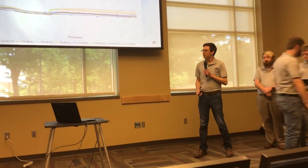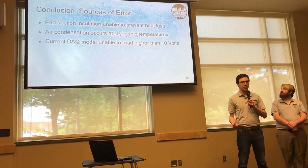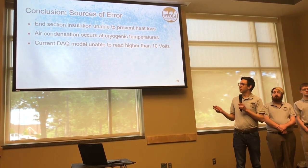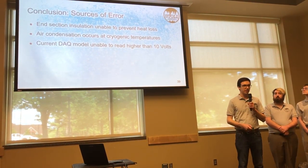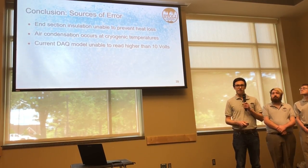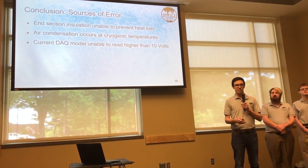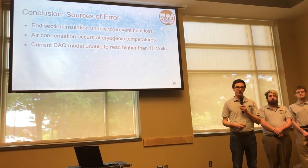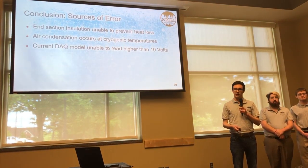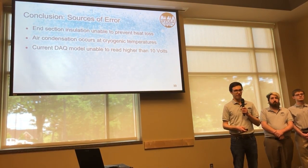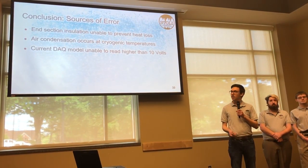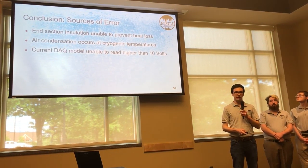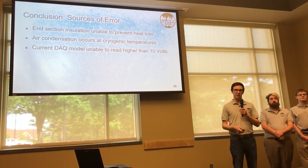There are a few primary sources of error. Our test section is leaking heat axially, and our model does not account for that — the axial loss is too significant to approximate as zero. We also observed air condensation, whether oxygen or nitrogen, occurring inside the pipe at liquid nitrogen temperatures. Additionally, the current DAC model cannot read higher than 10 volts, which would be a problem for high-power tests.